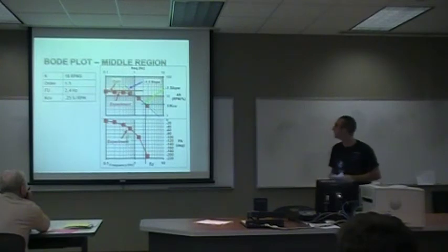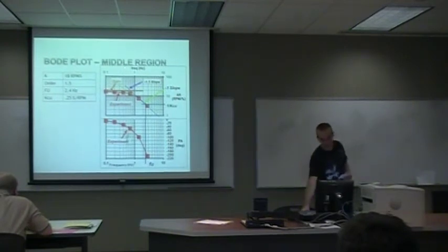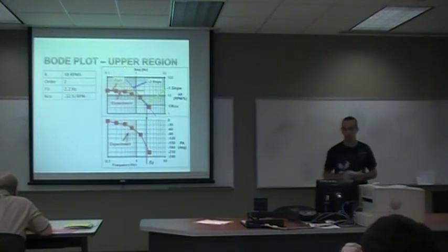And this is for the middle region with the gain of 18, an order of 1.5, the ultimate frequency of 2.4 hertz, and the ultimate gain of the controller of 1.25. And here's the upper with the 18 RPM percent gain, an order of 2, which is different from the first two.